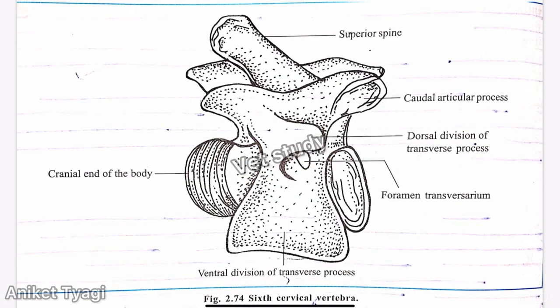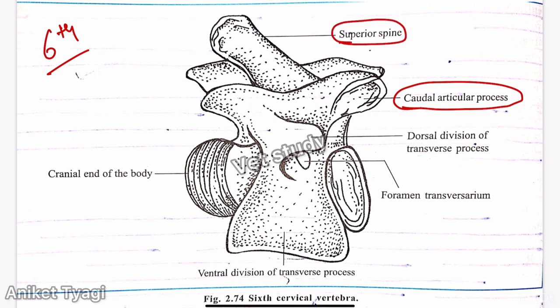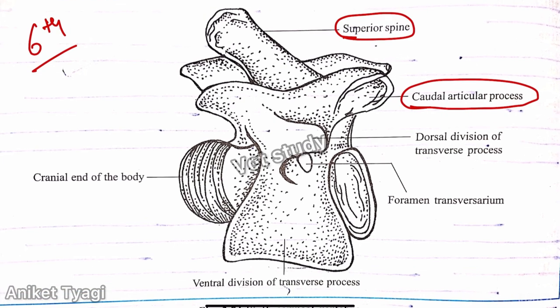Now let's talk about the sixth cervical vertebra. The articular process and spinous process are well developed. The lower part of the transverse process is in the form of a quadrilateral plate. The ventral spine is absent in this vertebra, and other features are similar to those of the fifth cervical vertebra.